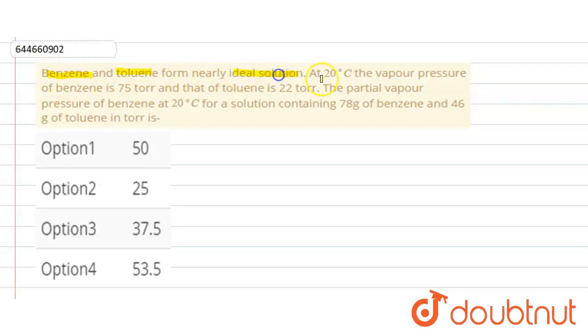Our question is: Benzene and toluene form nearly ideal solution at 20 degrees Celsius. The vapor pressure of benzene is 75 torr and that of toluene is 22 torr at 20 degrees Celsius. For a solution containing 78 grams of benzene and 46 grams of toluene in torr.